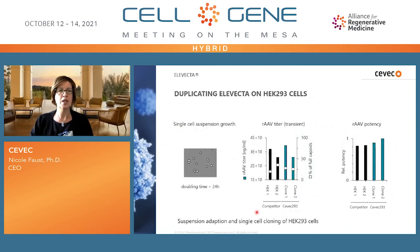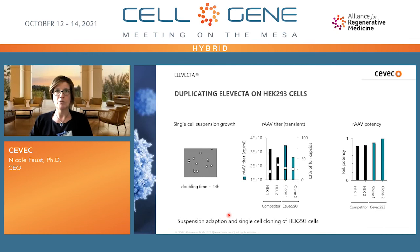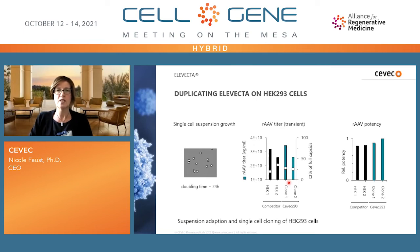The first step was to take an adherently growing ATCC HEK293 cell line, adapt it to suspension growth, and single-cell clone the cells. To confirm they're suitable for AAV production, we tested them in standard triple transfection and transient AAV production. Comparing to two well-known competitor HEK cell lines, our CEVEC-293 cells easily match those in titers and in percentage of full capsids in a triple transfection system, and we also see similar — if not slightly better — potencies for the AAV vectors produced.